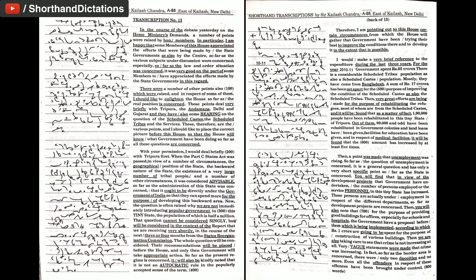There were a number of other points also which were raised, and in respect of some of them, I should like to enlighten the House so far as the real position is concerned. These points deal very briefly with Tripura, the Andamans, Delhi and Gujarat, and they also have some bearing on the question of the scheduled castes, the scheduled tribes and the services. Therefore, these are the various points and I should like to place the correct picture before this House. With your permission, I would deal briefly with Tripura first.